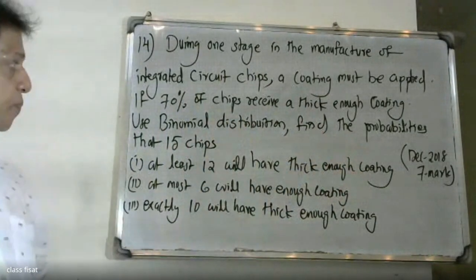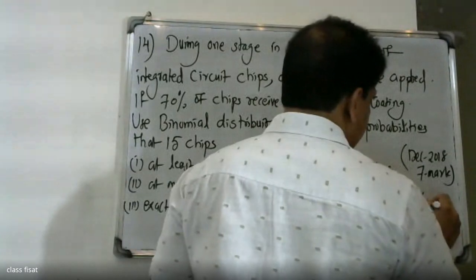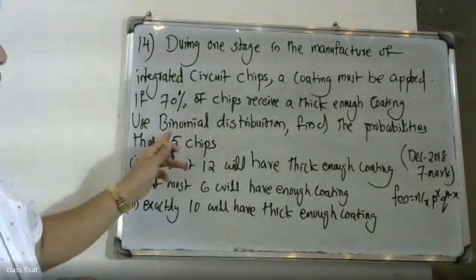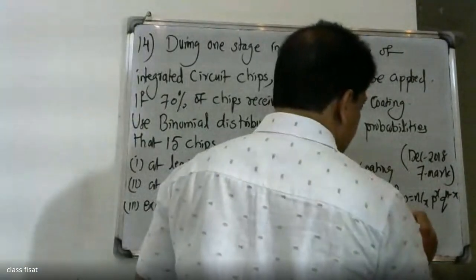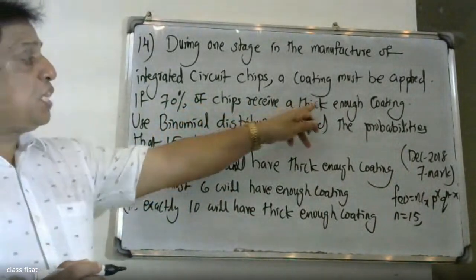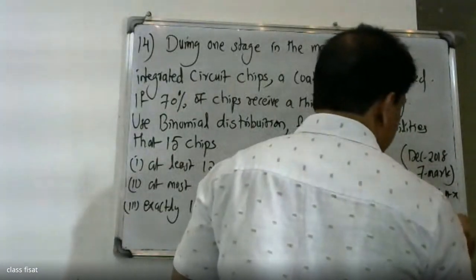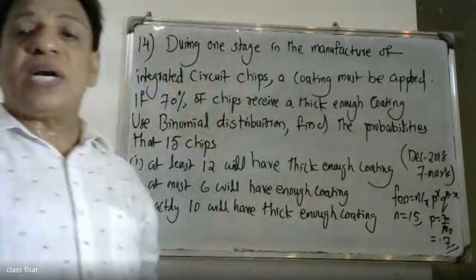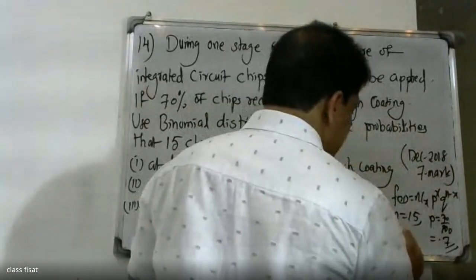We are going to use the binomial distribution. The binomial distribution function is NCX * P raised to X * Q raised to N minus X. Here n is 15, since we use 15 chips. The probability of success P is 70% of chips receiving a thick enough coating, so P equals 70/100 which is 0.7. Since P plus Q equals 1, Q equals 1 minus 0.7, so Q equals 0.3.